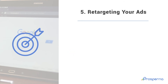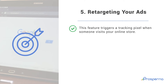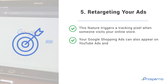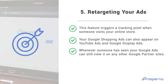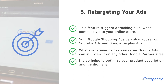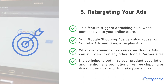Number 5: Retargeting Your Ads. This feature triggers a tracking pixel when someone visits your online store. Your Google Shopping Ads can also appear on YouTube Ads and Google Display Ads. Whenever someone has seen your Google Ads, they can still view it on any other Google Partner sites. It also helps to optimize your product description and mention any promotions like free shipping or discount on checkout to make your ad look even more attractive.